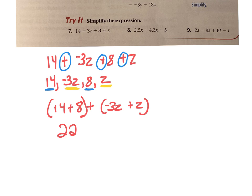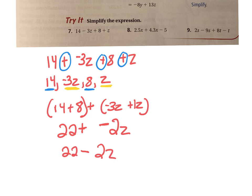14 and 8 is 22, plus negative 3z plus a positive z. I can always say this is like a 1z. If I have a negative 3 and I add a positive 1, then I have a negative 2z. So 22 plus negative 2z is the same as 22 minus 2z.